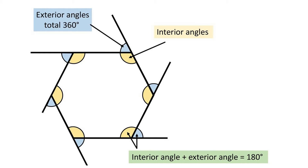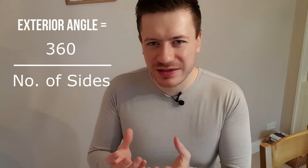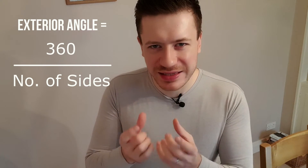Here's the truth about my amazing method. As you can see from the diagram, all the exterior angles go round 360 degrees. So if we do 360 degrees divided by the number of sides the shape has, that will tell us the exterior angle straight away. 360 degrees divided by the number of sides gives us the exterior angle directly.